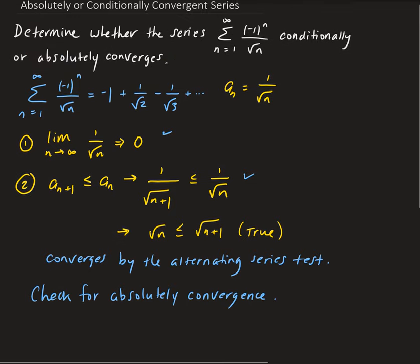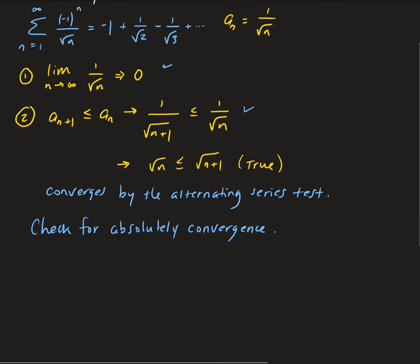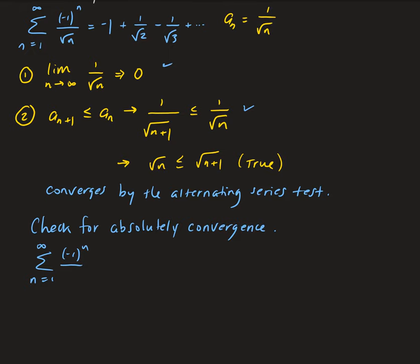For the original series, we have sum from n=1 to infinity of (-1)^n over root n. Taking the absolute value of this gives us 1 over root n.